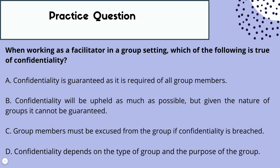Use process of elimination — we're looking for the correct answer by ruling out what is not true. Answer A says confidentiality is guaranteed as it is required of all group members. In a perfect world that would be the case, but we as the facilitator can never guarantee the actions of others. It's encouraged, but cannot be guaranteed, so A is ruled out.